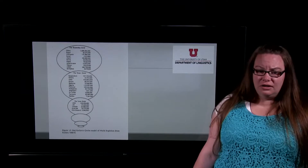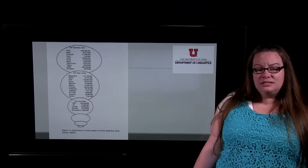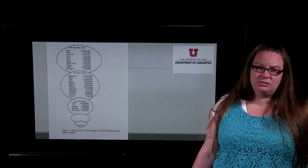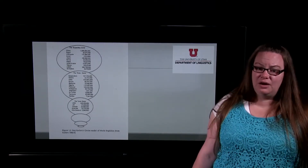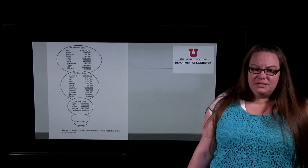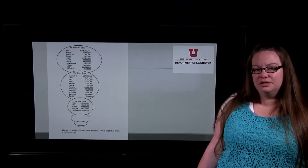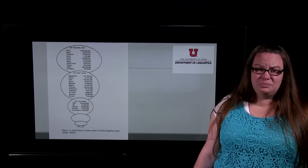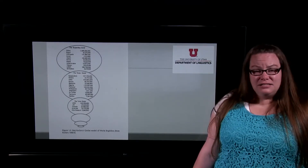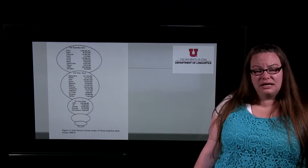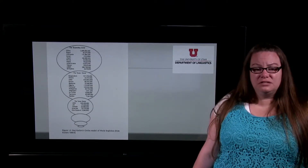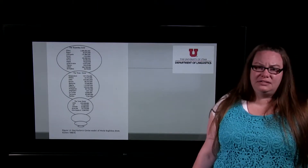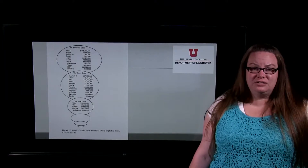As we move up to the outer circle, we have places where English may coexist with other languages — we call this a diglossic situation, where multiple languages are used for different tasks. English has been around a bit longer in some of those places. As we go to the expanding circle, those are places where English is a little bit newer. But being in the inner circle doesn't necessarily mean you have more speakers than some of the outer circles — today, we have far more non-native speakers or second language learners of English than we do native speakers.